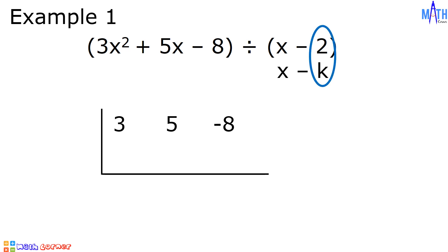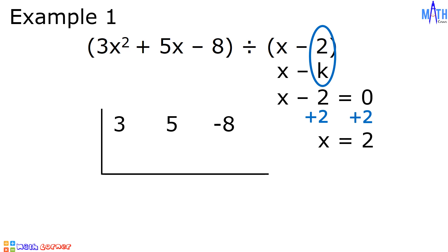Or we can equate x minus 2 to 0. To solve for x, we will add 2 to both sides of the equation. x minus 2 plus 2 is equal to x, and 0 plus 2 is equal to 2. Therefore, x is equal to 2. We will write 2 on the left side, and this is the setup for synthetic division.